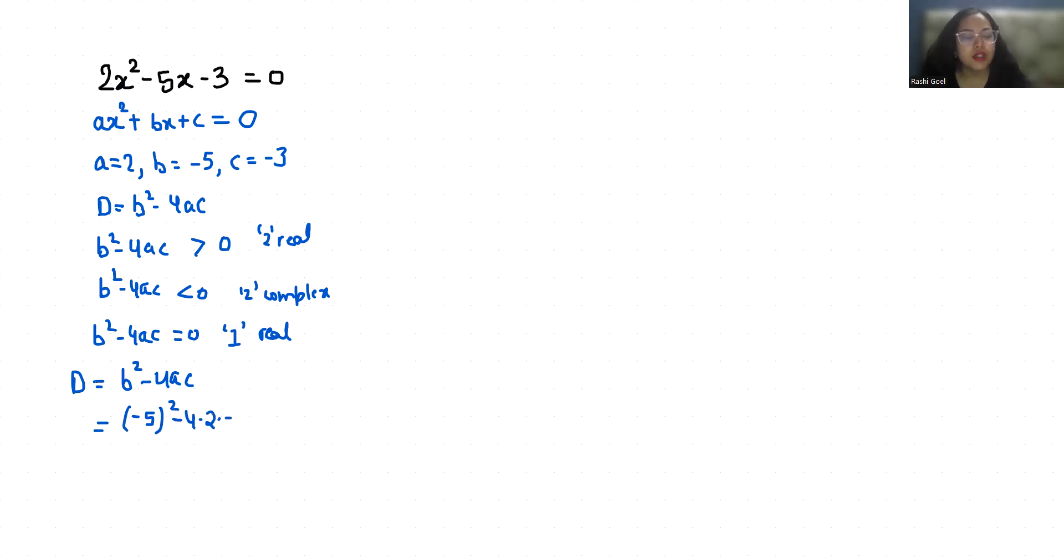(-5)² is 25. 4 times 2 is 8, 8 times 3 is 24. Minus times minus is plus. 25 + 24 = 49, and it is positive, that means greater than 0.